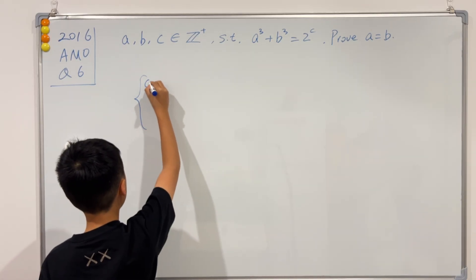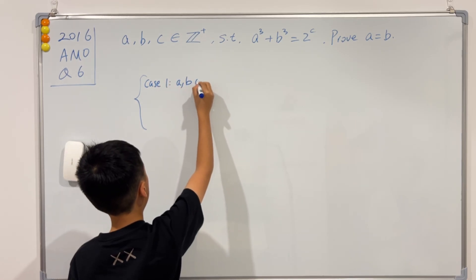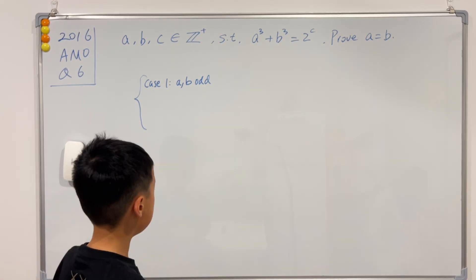Case 1 can just be a, b are both odd. In case 2, a and b are both even.